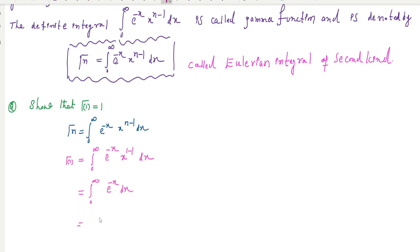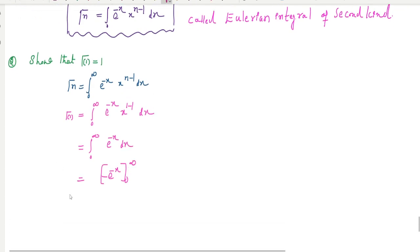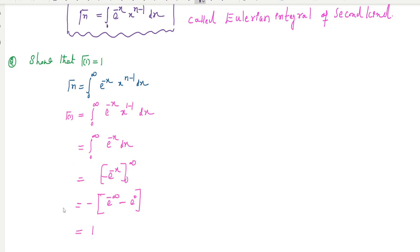Applying the limits carefully: e^(−∞) equals 0 and e^0 equals 1. So the result is −(0 − 1) equals −(−1) equals 1. Therefore gamma(1) equals 1. This is an important property of the gamma function.